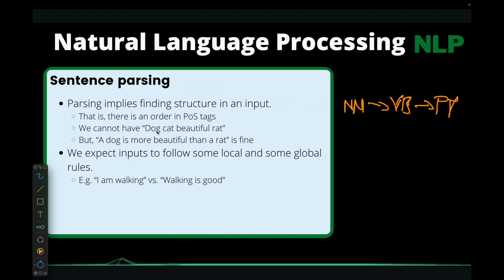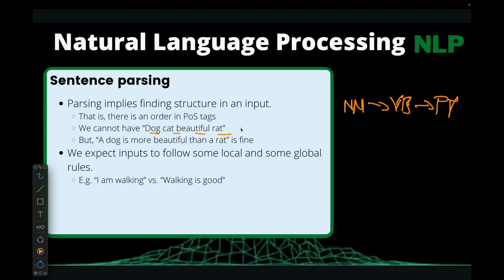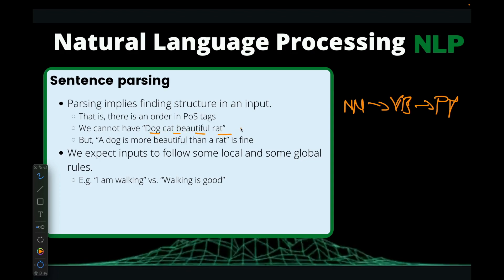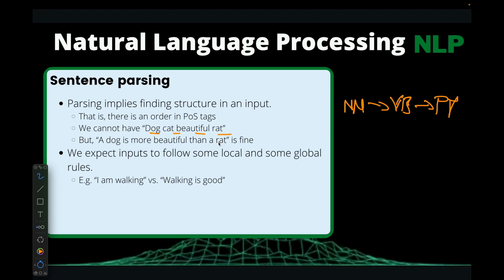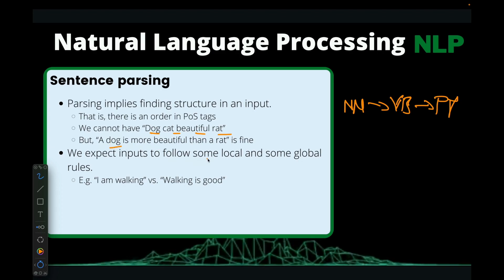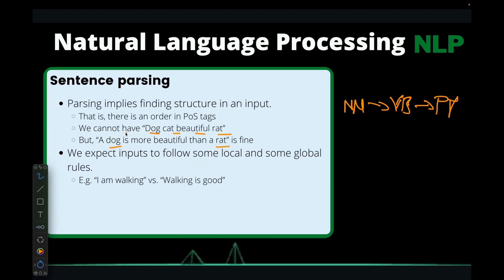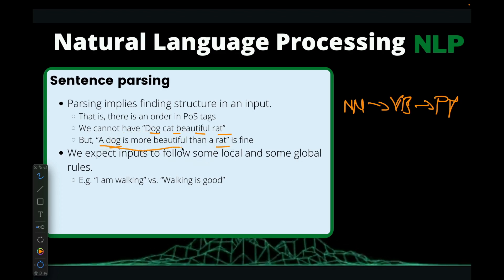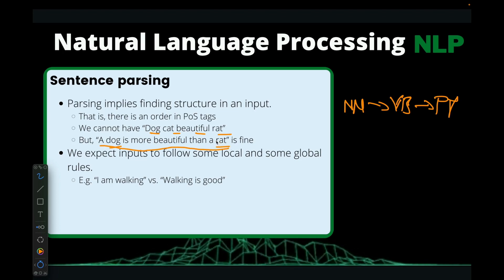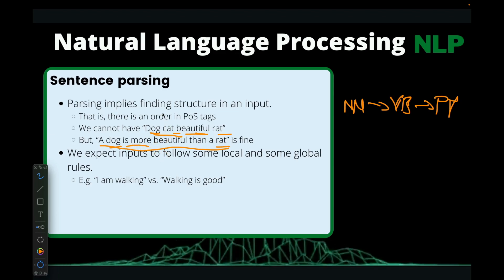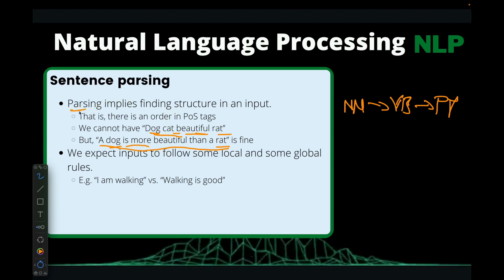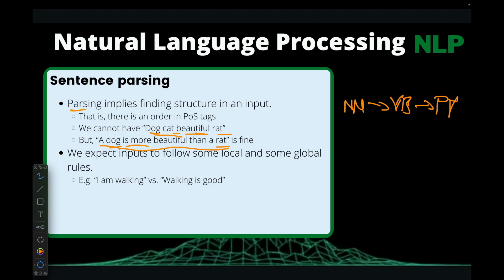For instance, we cannot have something like 'dog, cat, beautiful, rat' — that doesn't really make sense. But if you have something like 'a dog is more beautiful than a rat,' although intuitively it doesn't make sense to compare the beauty of a dog to a rat, grammatically the sentence is correct — there's some kind of structure in it.